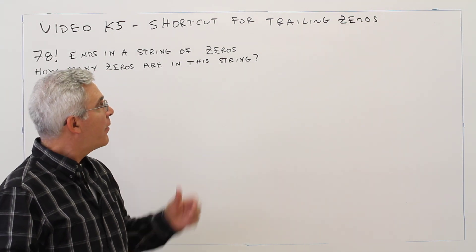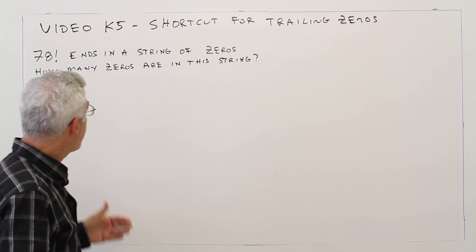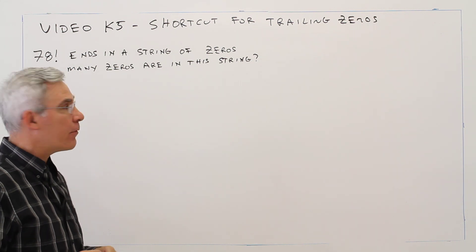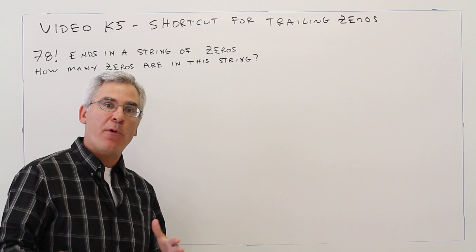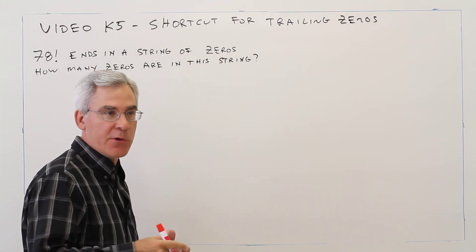Welcome to video K5. We're going to explore a shortcut for finding trailing zeros. Here's the problem: 78 factorial ends in a string of zeros. How many zeros are in this string? I'm going to do it both the old way and then develop a shortcut which will be helpful in future problems.